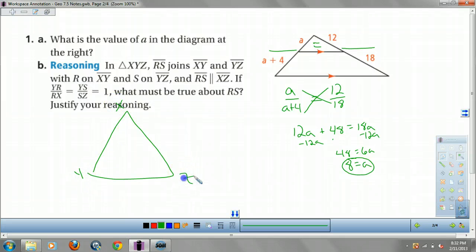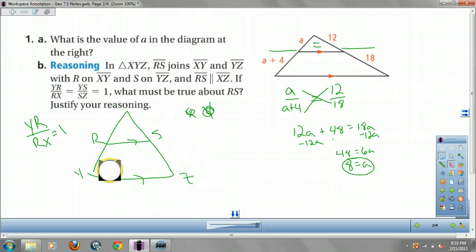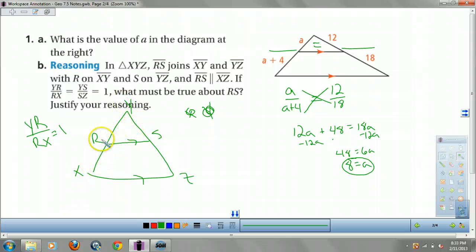Triangle XYZ. RS joins these two. These are parallel. If YR over RX equals 1. I drew that in the wrong spot. X, Y, and Z. And YS over SZ equals 1. That means these two things are congruent, and these are. Which means R and S are midpoints.